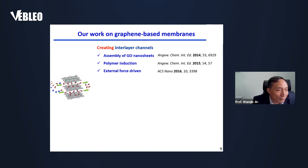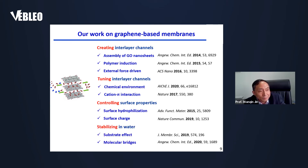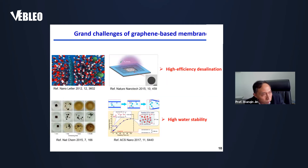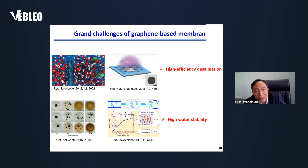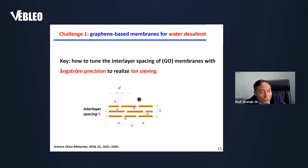Our work on graphene oxide (GO)-based membranes includes four aspects: creating interlayer channels, tuning interlayer channels, controlling surface properties, and stabilizing the membrane in water. Although graphene-based membranes have shown excellent molecular sieving ability in gas separation, there are still two grand challenges for water treatment: high-efficiency desalination and high water stability. The challenge for GO-based membranes for water desalination is how to tune the interlayer spacing with angstrom-level precision to realize ion rejection.